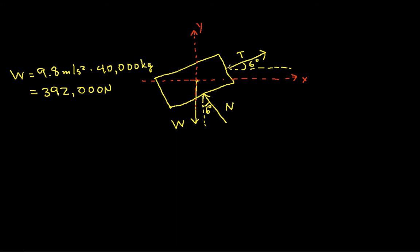And now we need to find the components of T and N in the x and y direction. And then because we're doing a static analysis, we'll sum the components in the x direction and set them equal to 0. We'll sum the components in the y direction, set them equal to 0, and solve the resulting system of equations.